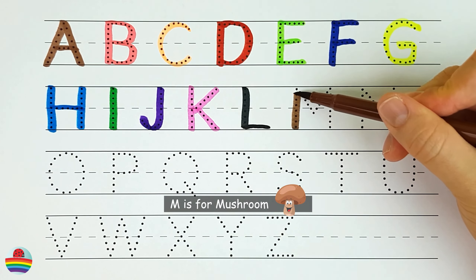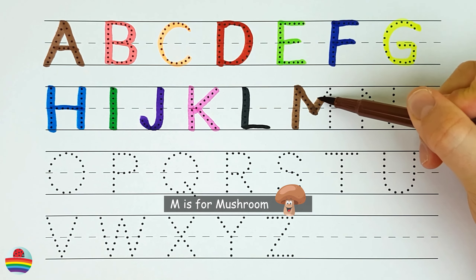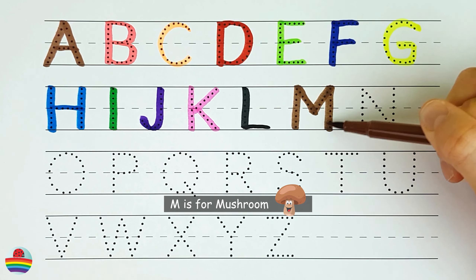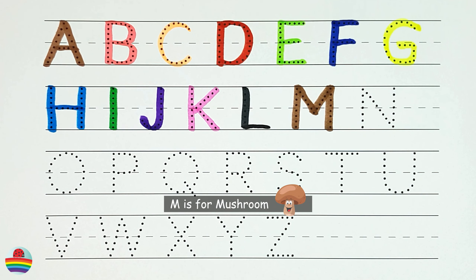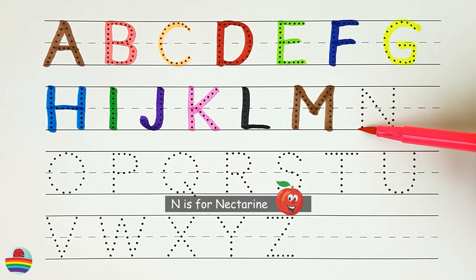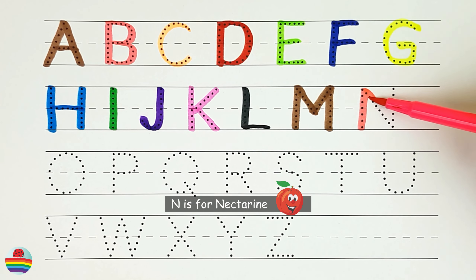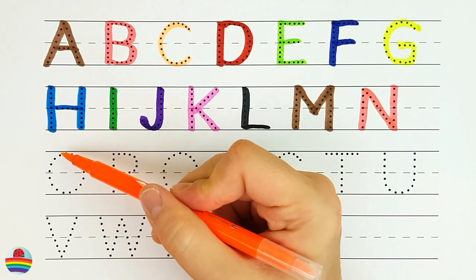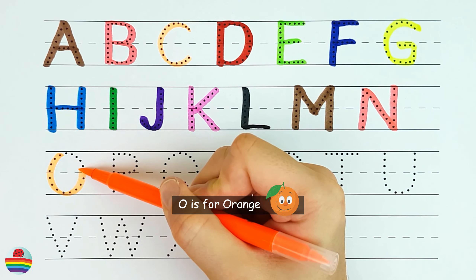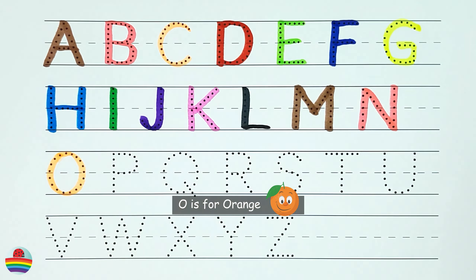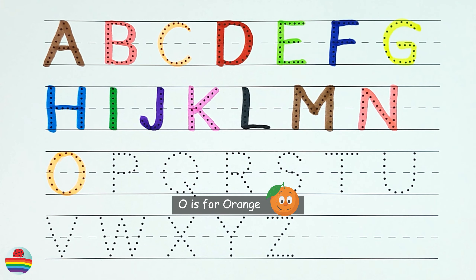M. M is for mushroom. M. N. N is for nectarine. N. O. O is for orange. O.